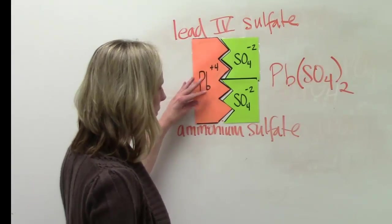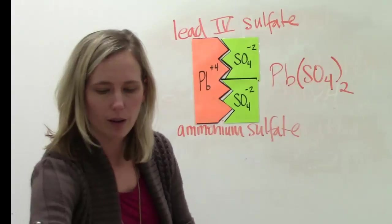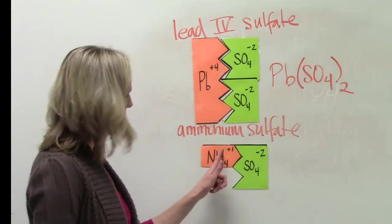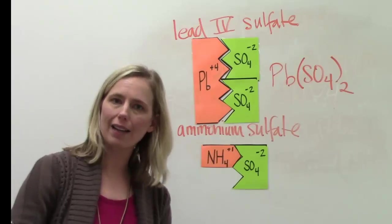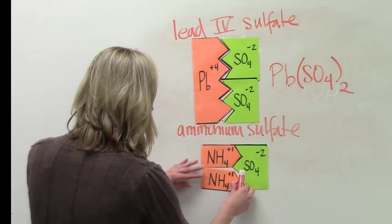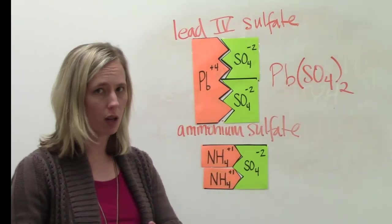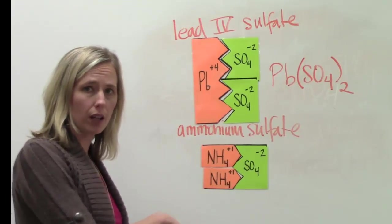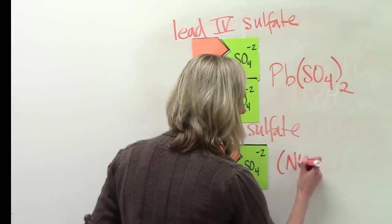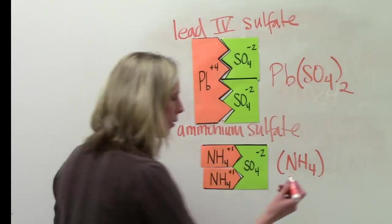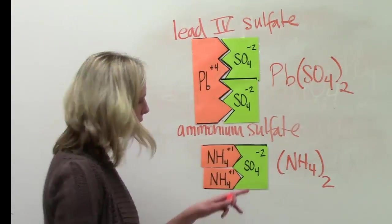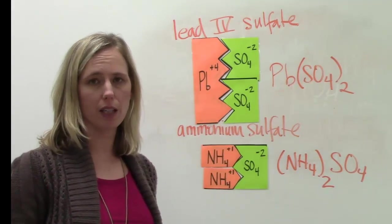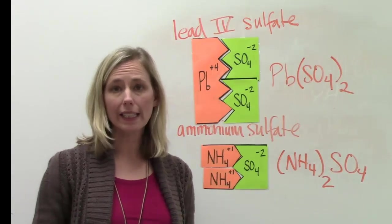For ammonium sulfate, ammonium has a positive one and sulfate has a negative two. Let's go for positive two, negative two. We need two ammoniums to every one sulfate. Since ammonium is a polyatomic ion and we need more than one, we put it in parentheses: (NH4)₂ — don't lose that four — with the two outside the parentheses. The sulfate, even though it's a polyatomic ion, doesn't need parentheses because you only need one.